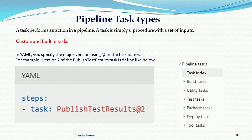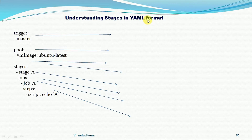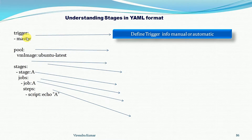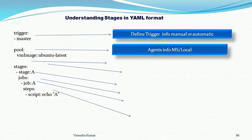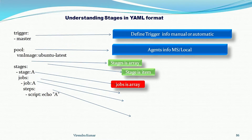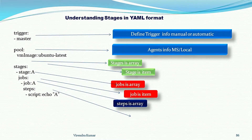Now the question is where to define the task. A task always comes under the steps. To understand the pipeline hierarchy in YAML format: first we define the trigger information, then the pool information, then we have stages, and under the stages we define individual stages. Under each stage we have jobs, and under a job we define steps. Within the steps we have scripts or tasks.